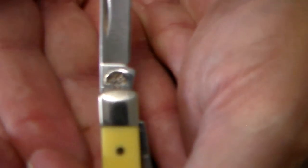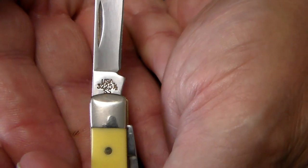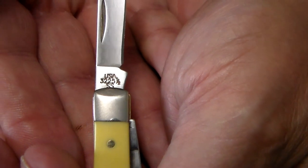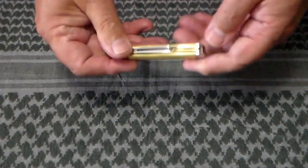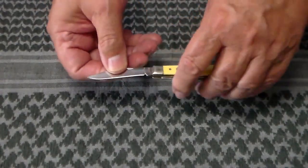On the stamp on the small blade, there's the model number, made in the USA, stainless steel. Let me go over the specs on this knife real quick.